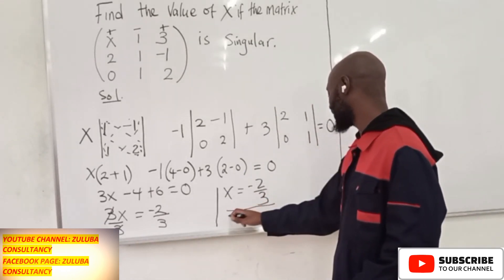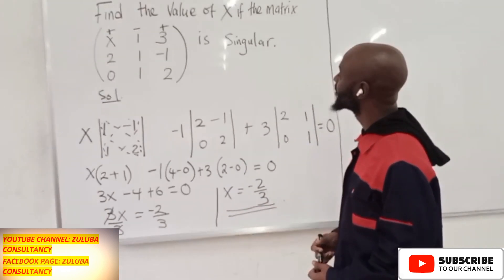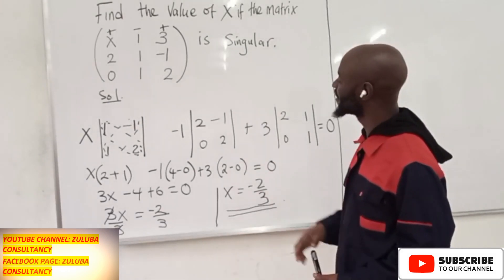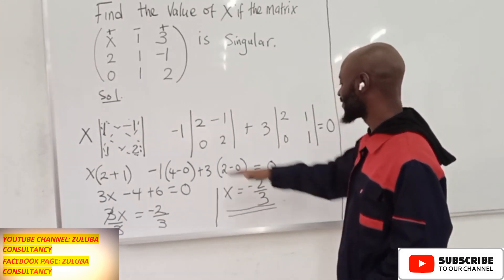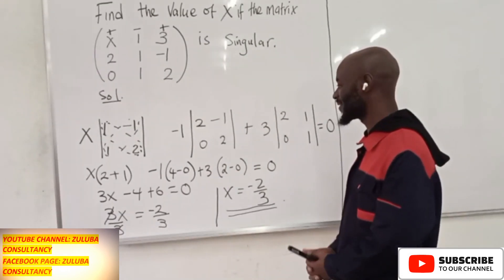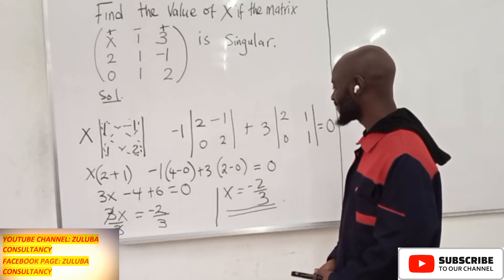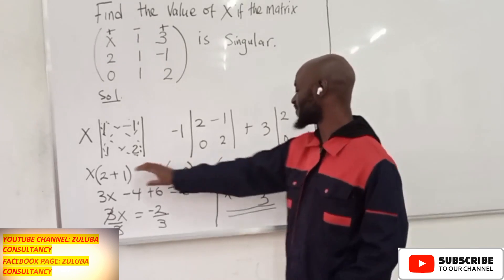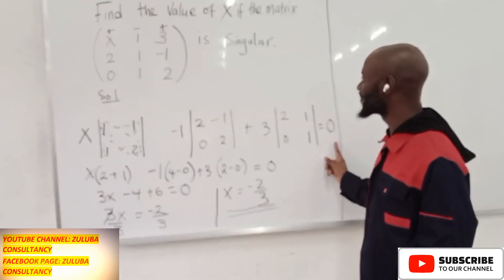This will be the value for X for which this particular matrix is singular. You can use other rules to calculate the determinant. But what you do is, after you calculate the determinant, you have to equate the determinant statement to 0.